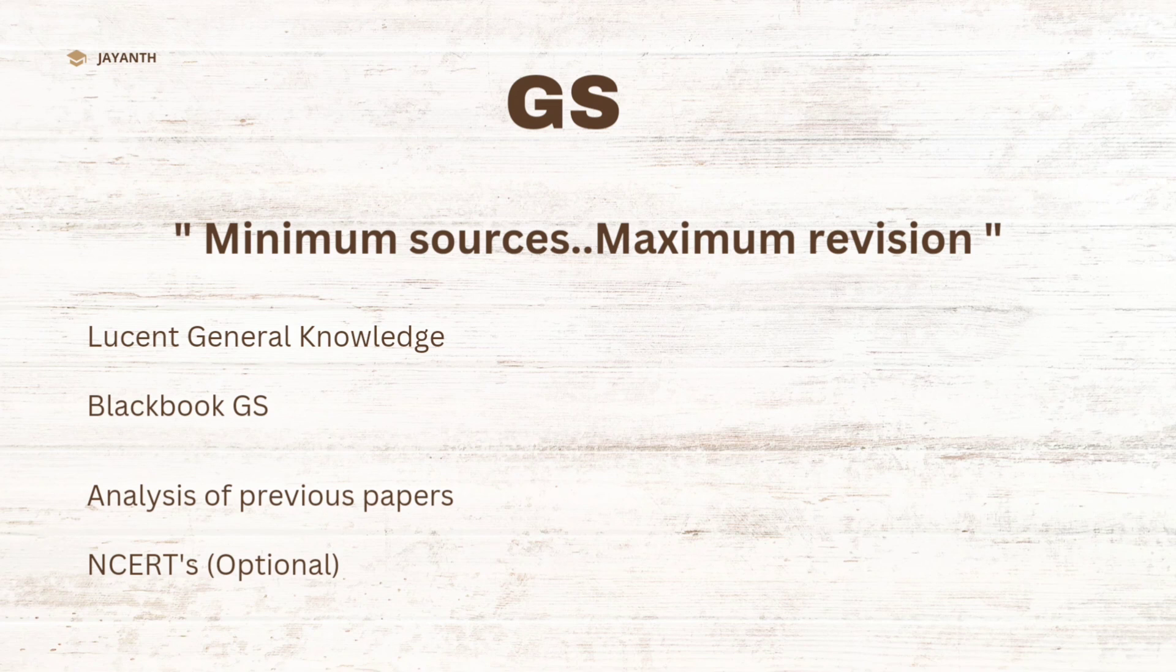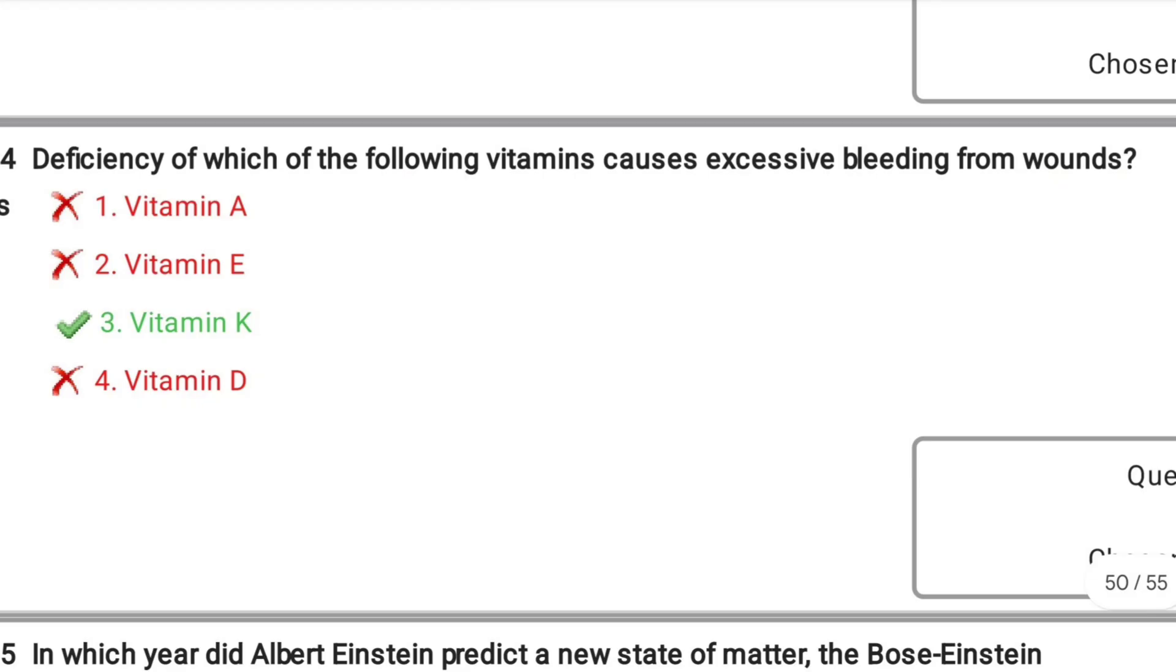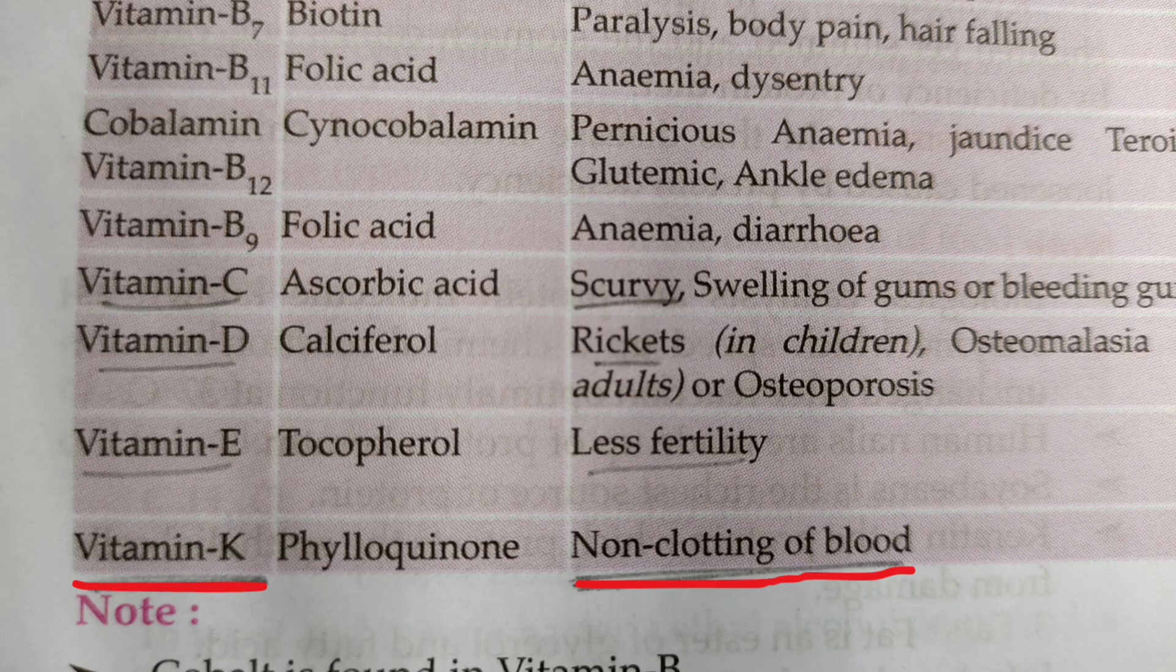Let me show you my final exam paper and the book I used to rely on for tier 2. Deficiency of which of the following vitamins causes excessive bleeding from wounds? You can see here vitamin K, non-clotting of blood. So it's a direct question from Lucent.